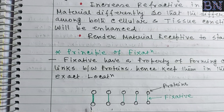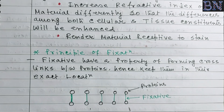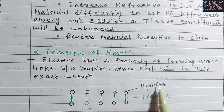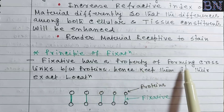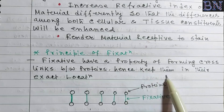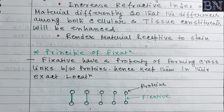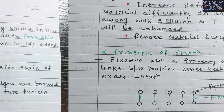When we use a fixative on tissue, we prevent autolysis and microbial attack. Autolysis is very harmful to the tissue. We fix the tissue so that autolysis does not occur. The fixative works by forming cross-links between proteins — the proteins in the cell are bridged and fixed in their exact location.